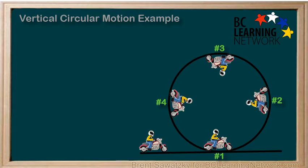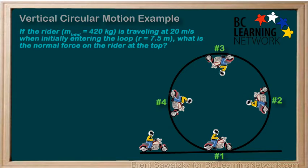To add some numbers to this particular example, our example becomes if a rider is traveling at 20 meters per second when they initially enter the loop with a radius of 7.5 meters, what is the normal force on the rider at the top of the loop?